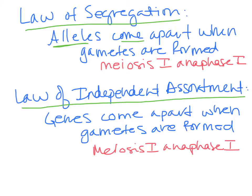The law of independent assortment asserts that genes come apart during meiosis I, anaphase I, when gametes are formed. This suggests that the genes come apart from each other, not just alleles. So you have to be talking about more than one gene — two traits are not linked together, but come into the gametes independently or separately from each other.